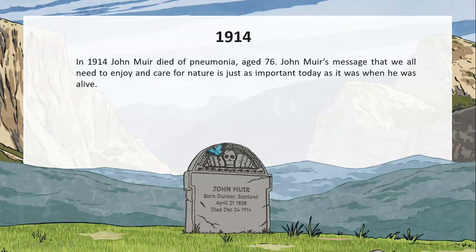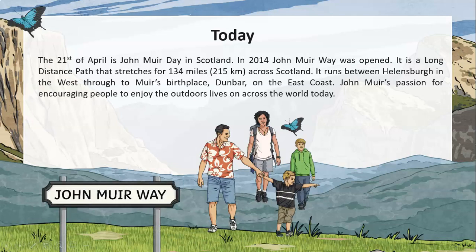In 1914, John Muir died of pneumonia, age 76. John Muir's message that we all need to enjoy and care for nature is just as important today as it was when he was alive. Today, the 21st of April is John Muir Day in Scotland. In 2014, John Muir Way was opened — a long-distance path stretching for 134 miles or 215 kilometres across Scotland, running between Helensborough in the west through to Muir's birthplace, Dunbar, on the east coast. John Muir's passion for encouraging people to enjoy the outdoors lives on across the world today.